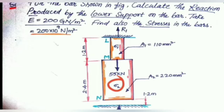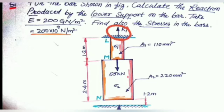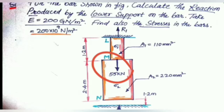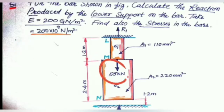The basic equation is delta L equals PL divided by AE. The reaction forces are equal to the force applied, so R1 plus R2 is equal to 55 kN.